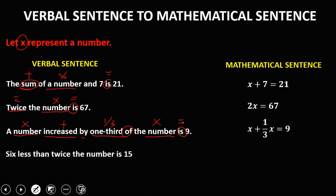'6 less than twice the number is 15.' You need to be careful on this statement, because '6 less than twice the number' means twice the number minus 6. So that becomes: 2x - 6 = 15.